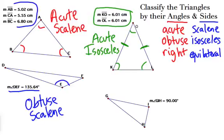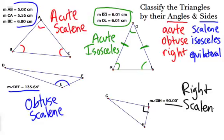Our final one — we have angle I here, which is clearly a right angle. It measures 90 degrees. So this is a right scalene, because again all the sides are different. So we have all the angles represented. The only side type we didn't have is equilateral.